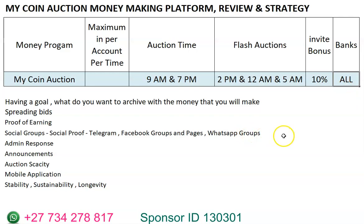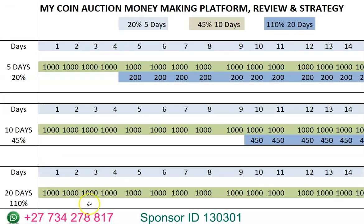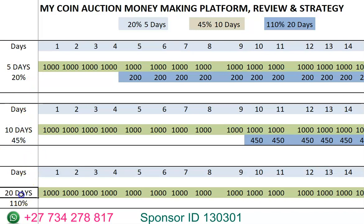In terms of banks you can use to withdraw money from this system, you can use any bank in South Africa. We are going to be looking at the strategy for putting money in and how you can take money out. There are three variations: the five-day plan giving 20 percent, the 10-day plan giving 45 percent, and the 20-day plan giving 110 percent.